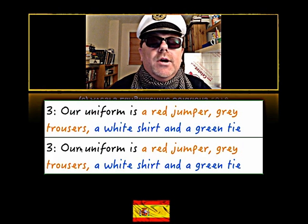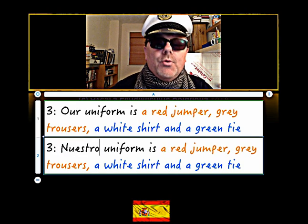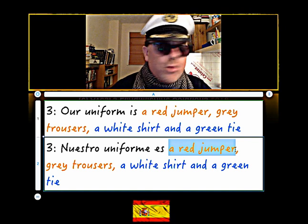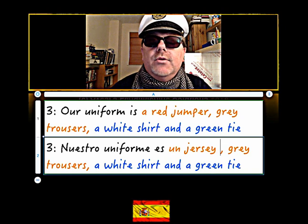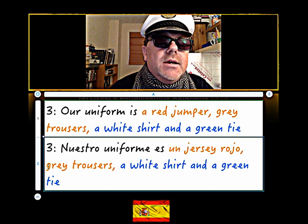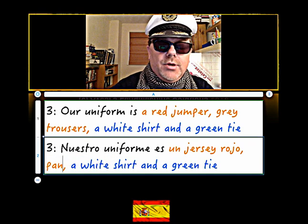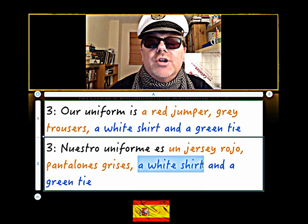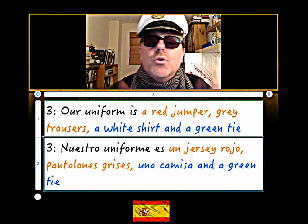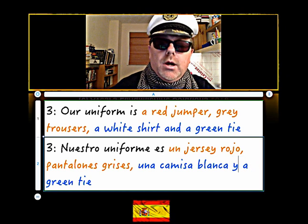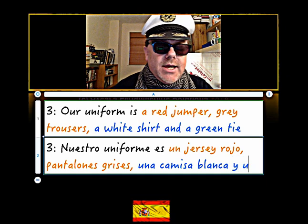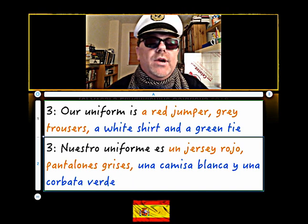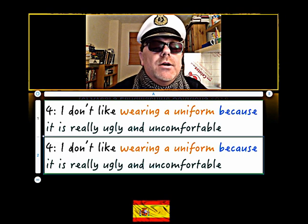Number three. Our uniform is - 'nuestro uniforme es'. Now a red jumper is 'jersey' - we've got 'jersey' like this - and then red is 'rojo', so the adjective and color come afterwards. Now gray trousers - 'pantalones' - you've got 'pantalones grises'. A white shirt - 'una camisa' - you've got 'una camisa blanca'. And a green tie - 'una corbata verde'.